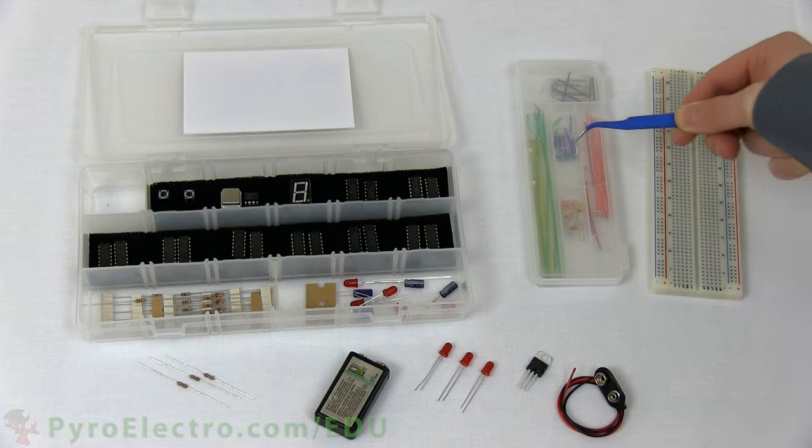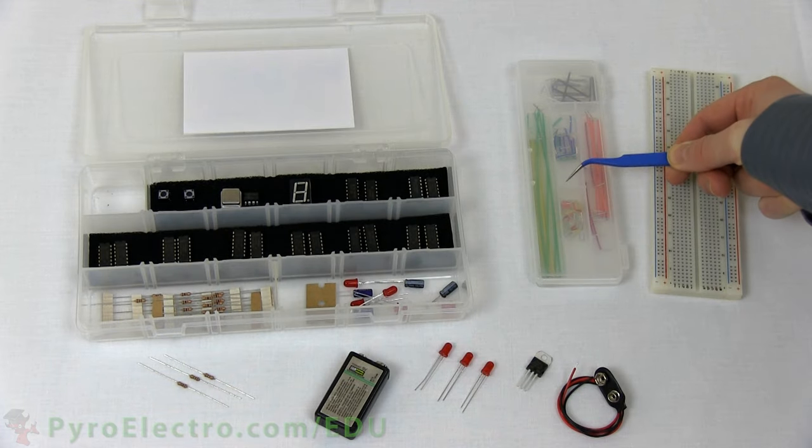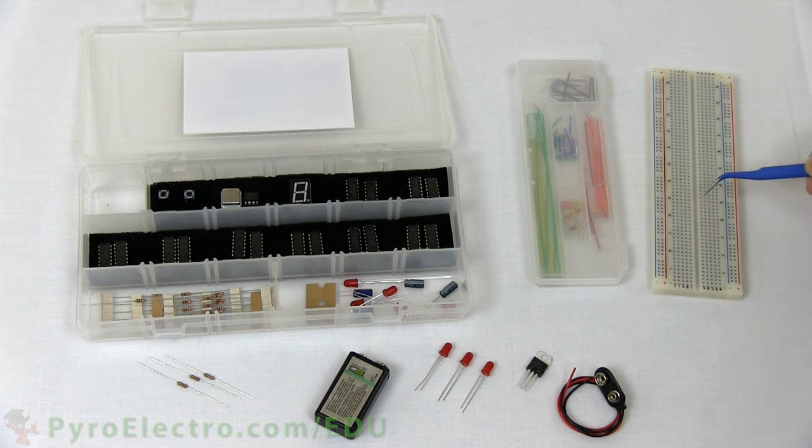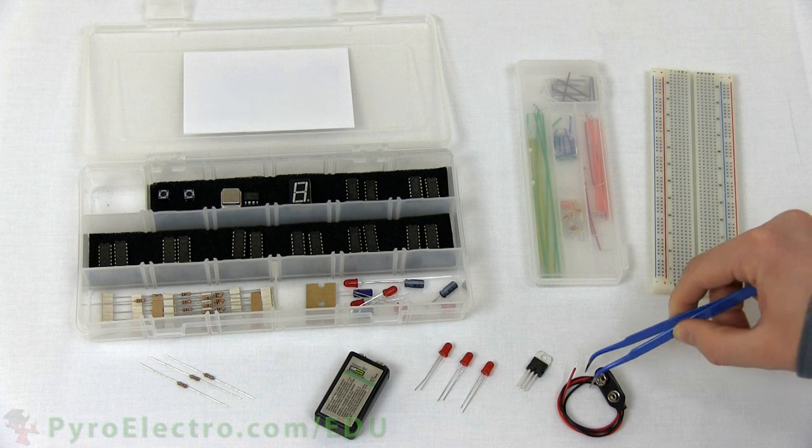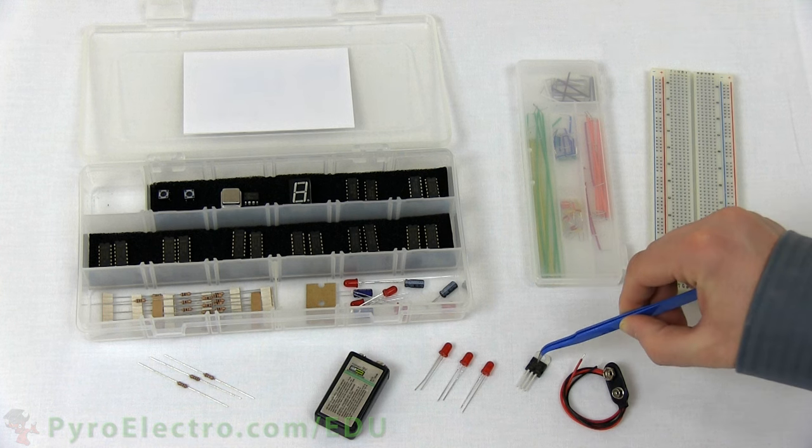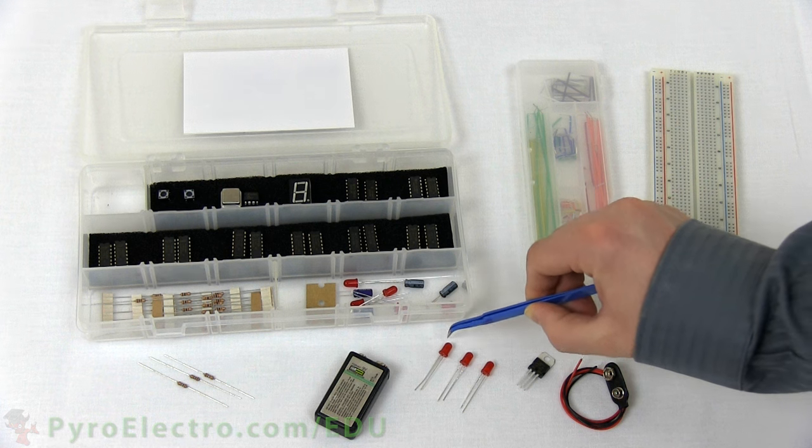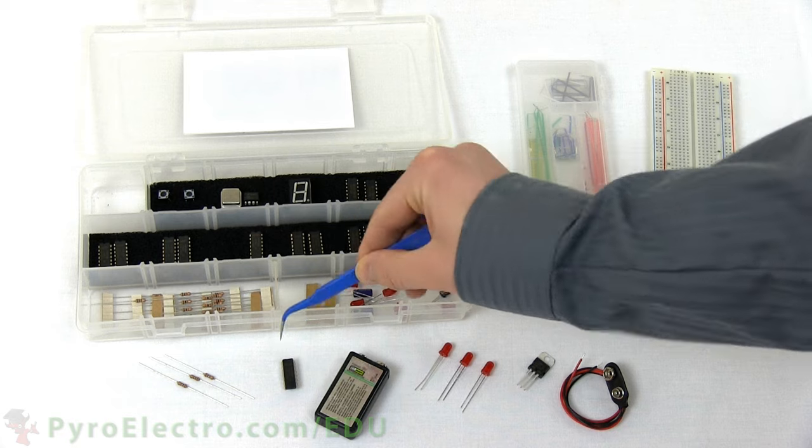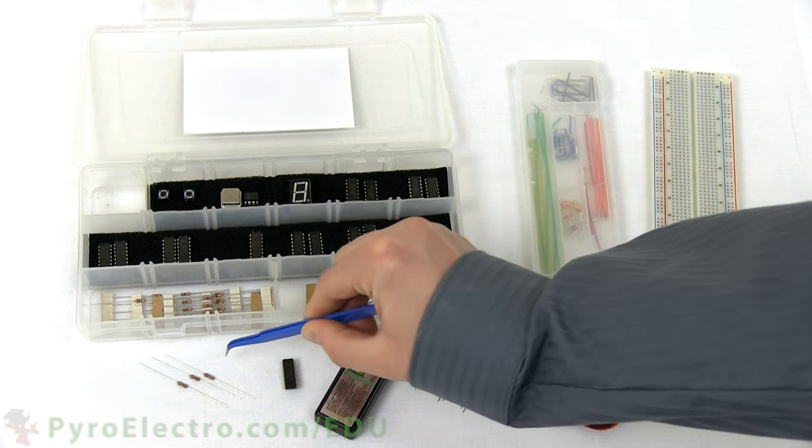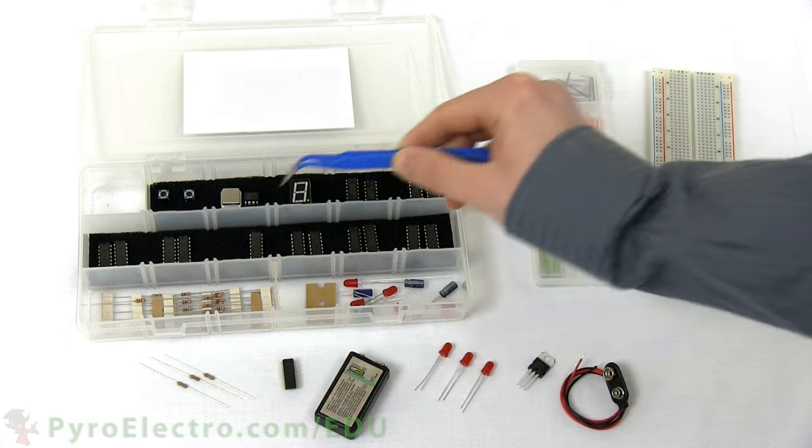The parts used in this experiment are a jumper wire from the wire kit and a breadboard. From the components kit, we'll need a 9 volt battery connector, a 7805 plus 5 volt regulator, 3 red LEDs, a 9 volt battery, a 74HC08 integrated circuit, and 3 100 ohm resistors.